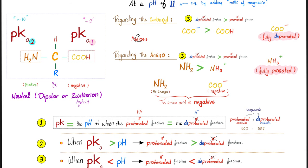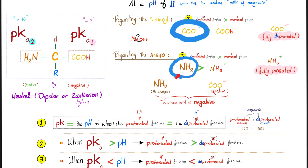So let's apply this for each group. For the carboxyl group, the deprotonated form is the one without the hydrogen — that's COO⁻ — so COO⁻ wins. For the amino group, the deprotonated form has fewer protons — that's NH2. So glycine will exist in the form that has COO⁻ and NH2.